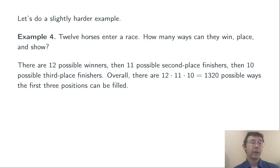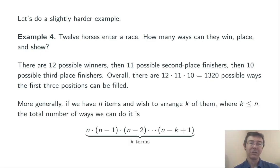So we use the fundamental counting principle again. 12 possible winners, 11 possible second place finishers, and then 10 possible third place finishers. So overall, we have 12 times 11 times 10, or 1320, possible ways that the first three positions can be filled.